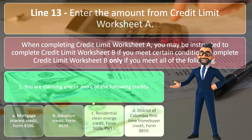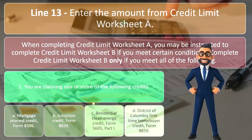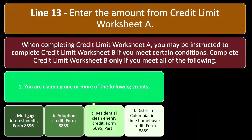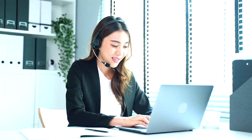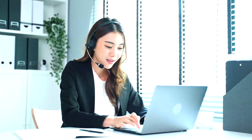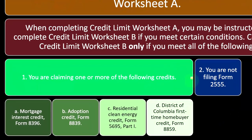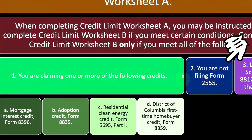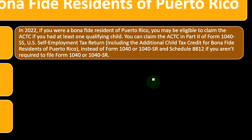These are areas where tax software is helpful — if you're doing the data input properly, it can help pick up those kinds of changes, and then you can double-check and verify by deconstructing to make sure everything's properly done. Two, you are not filing Form 2555. Three, line four of Schedule 8812 is more than zero.